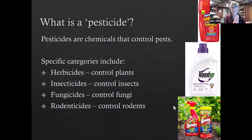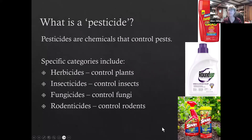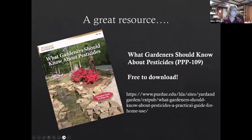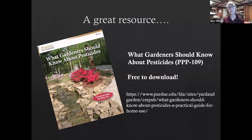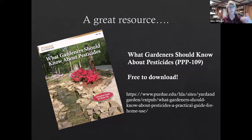I'll try to be specific tonight and use particular names for each group of pesticides. On the right you can see Daconil fungicide — a very popular fungicide — Roundup, a very popular herbicide, and Sevin, of course, a very popular insecticide. We're going to be talking more about those last two categories. I want to put in a plug for Extension and a great publication: 'What Gardeners Should Know About Pesticides.' A lot of the information I'm going to give you came from that. It is free to download — just go to the Extension publications site and enter PPP-109.